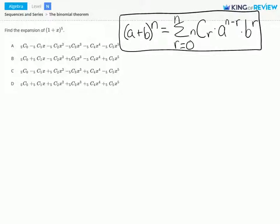Looking at the original question, n is equal to 5, a is equal to 1, and b is equal to x. Now let's set up our problem.